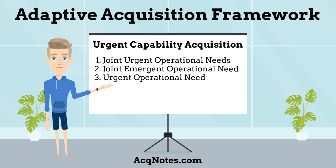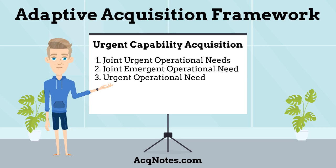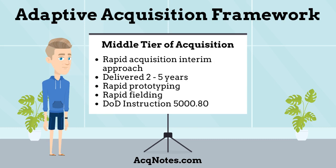There are three types of urgent needs: 1. Joint Urgent Operational Needs, 2. Joint Emergent Operational Need, and 3. Urgent Operational Need.